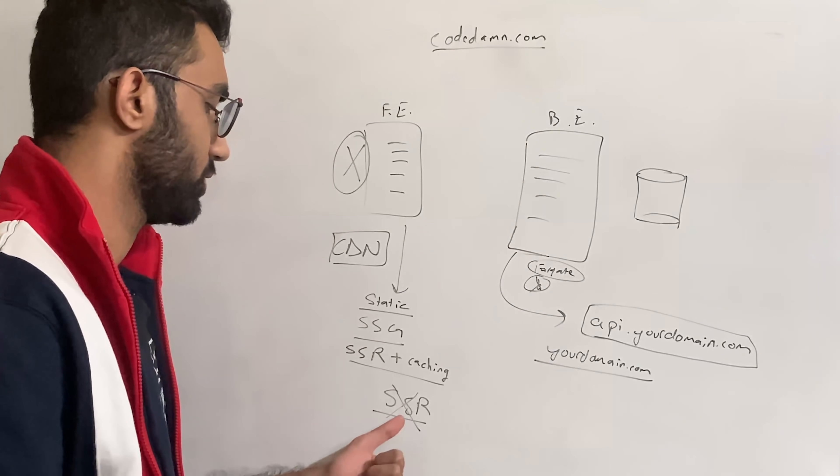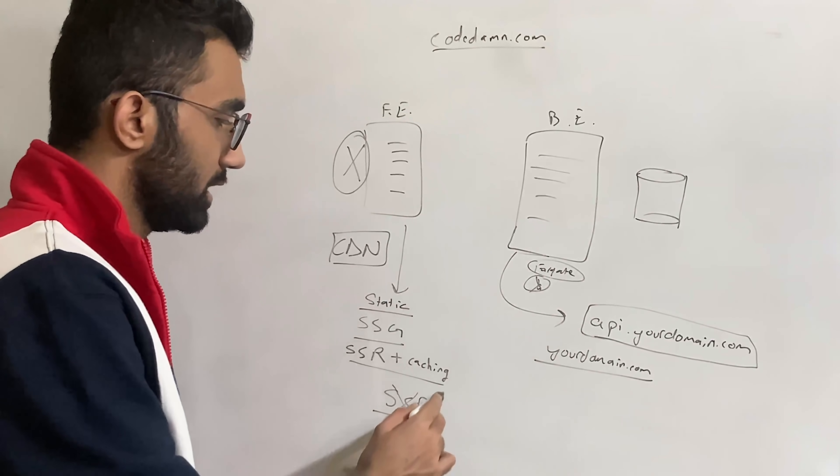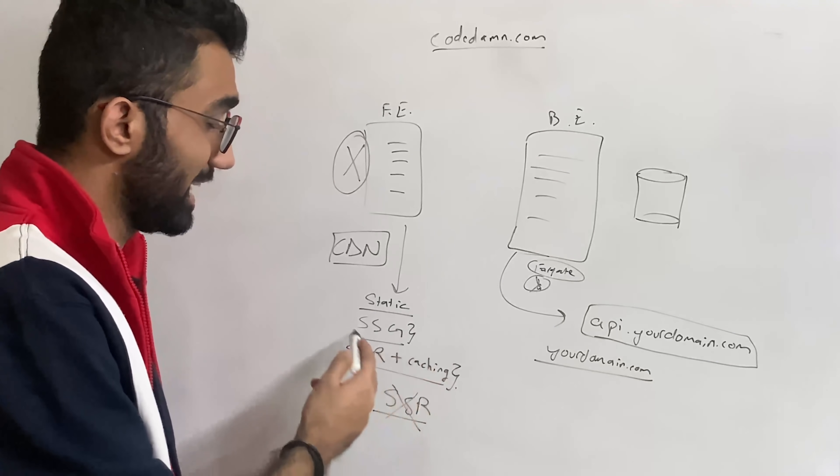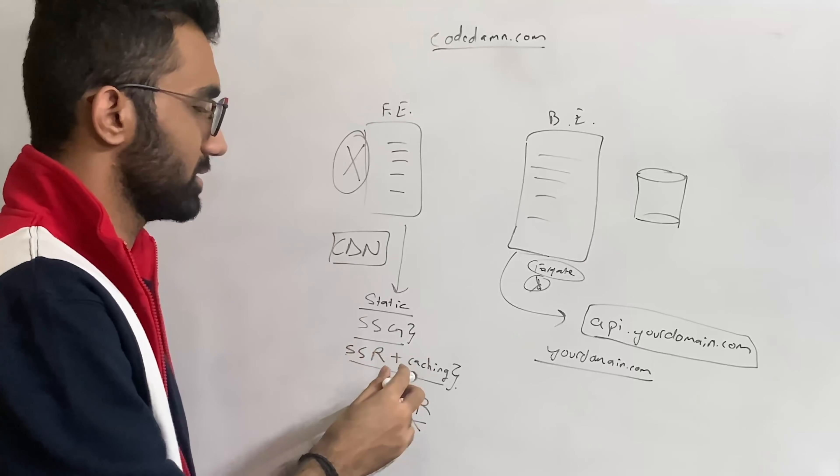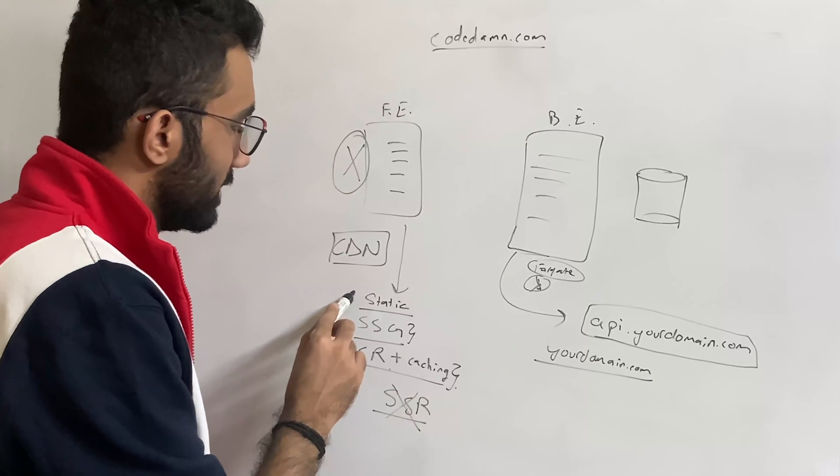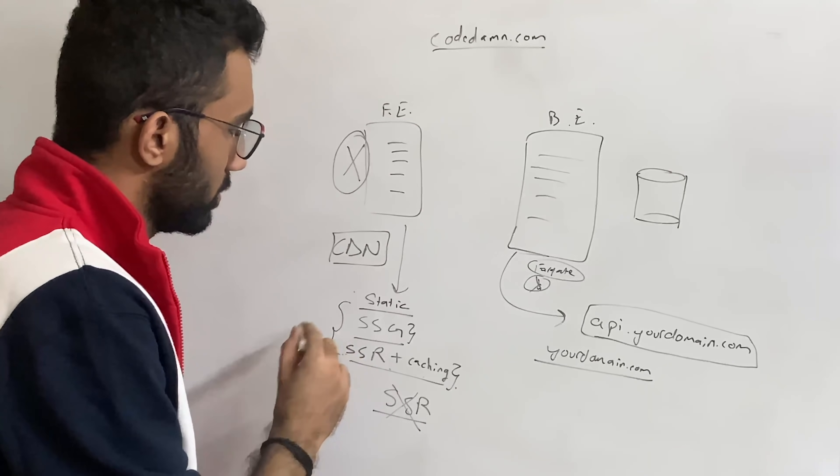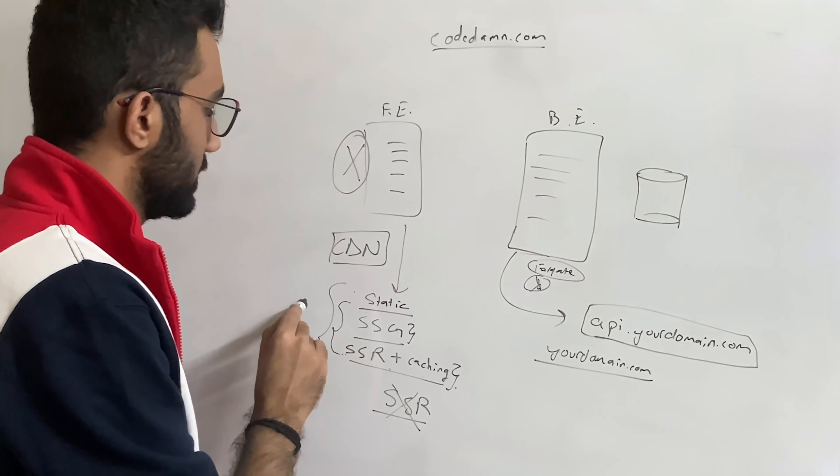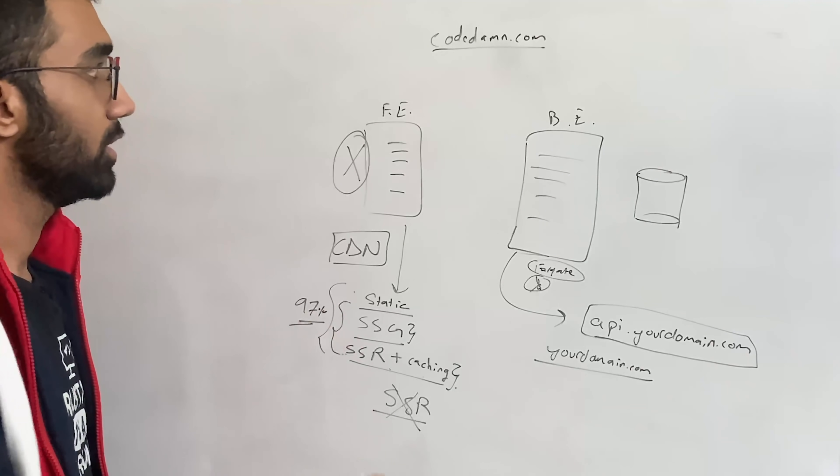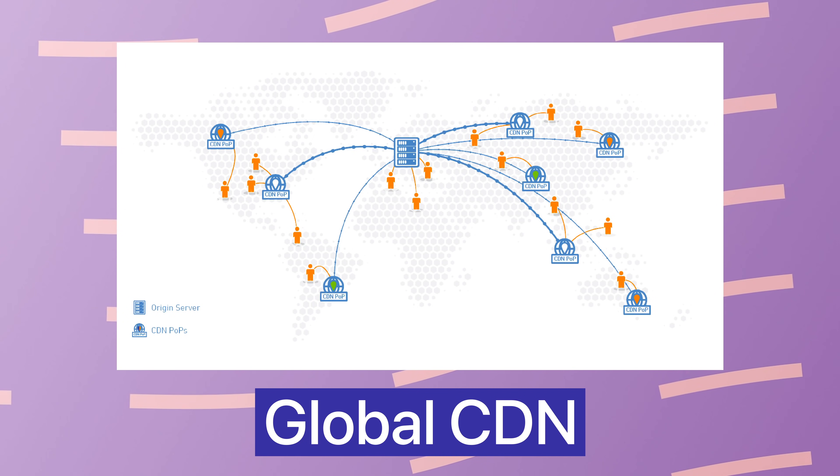But in a lot of cases you can get away with static site generation and server side rendering plus caching. So assuming that you can get away with these two or three at max, if it covers your 97% of the use case, that's a good enough reason to ditch a single server and use a global CDN as a front end kind of thing.